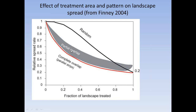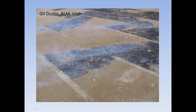This graph shows the fraction of the landscape treated versus the relative spread rate. Random treatments have little reduction in spread rate, whereas optimal overlap has a dramatic effect. There are diminishing returns after you treat around 30 to 40 percent of the landscape — the bang for the buck decreases. These are really important concepts in landscape fuel treatment planning, and there's empirical evidence from studies in rangelands, where some concepts have been substantiated by controlled fires.